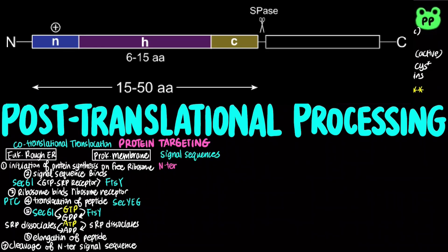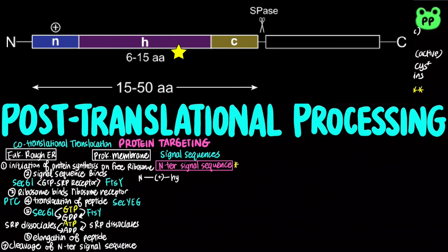The N-terminal signal sequence, which directs polypeptide co-translationally to the ER, includes one or more positively charged residues usually near the amino terminus, followed by 15–30 hydrophobic amino acid residues, and a short sequence at the carboxyl terminus that is relatively polar with alanine close to the cleavage site.